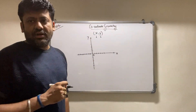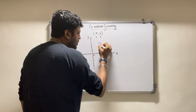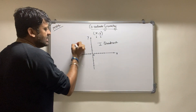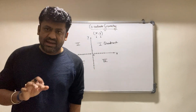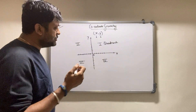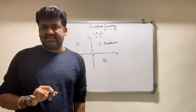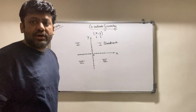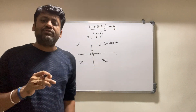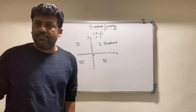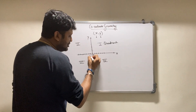Any point in this x-y plane is denoted by x comma y. In this plane, there are four regions called quadrants. Going anti-clockwise: this is my first quadrant, second quadrant, third quadrant, and fourth quadrant. Apart from the quadrants, a point can also lie on the x-axis or the y-axis. So there are six possible places where any point x comma y can lie. Where the x-axis and y-axis intersect, that point is the origin, which is 0 comma 0.